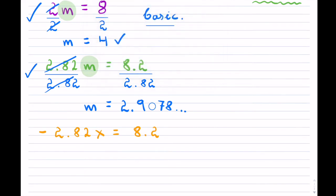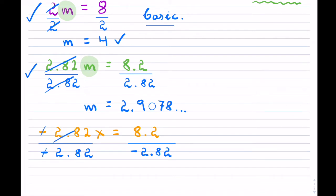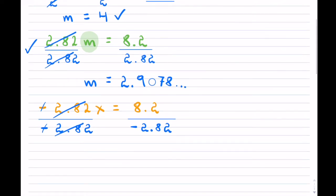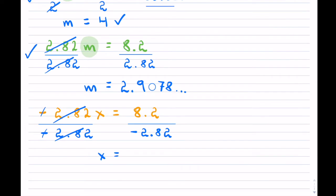All you have to do is divide both sides, except now you're dividing by a negative number. On the opposite side, you'll be dividing by a negative number. The negative on the top and the negative below cancel, and the numbers cancel themselves. Since I used exactly the same numbers, my answer is now negative 2.9078 and so on. Don't get thrown off by the negatives.